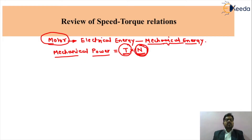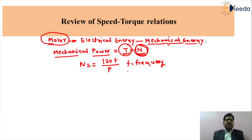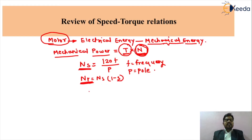For the induction motor, the synchronous speed is the speed of the rotating magnetic field, given by Ns = 120F / P, where F is frequency and P is the number of poles. The rotor speed is given by Nr = Ns × (1 - S), where slip S = (Ns - Nr) / Ns.